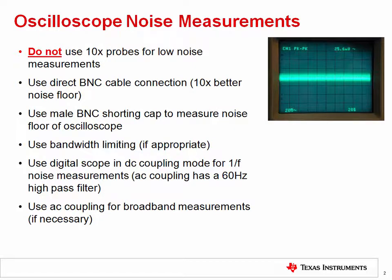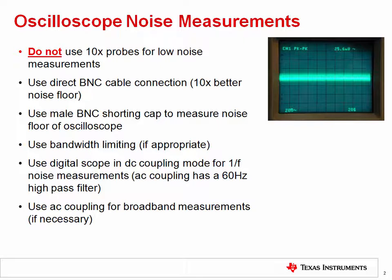Always check the noise floor of any instrument before making noise measurements. In the case of an oscilloscope, it is common to use a BNC shorting cap to determine the instrument's noise floor. Many oscilloscopes have bandwidth much wider than your system's bandwidth — for example, you may use a 400 MHz scope to observe noise of a 100 kHz amplifier. Most scopes have a bandwidth limiting feature that significantly reduces bandwidth and consequently improves the noise floor.